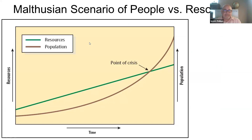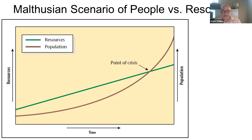We can look at this in a couple of different ways. One is what's called a Malthusian scenario — people versus resources. Malthus was a writer alive during the Industrial Revolution who wrote a famous paper looking at the growth of population versus the growth of resources. He saw population was growing exponentially but resources were growing more slowly, and theorized we would reach a crisis point where there wasn't enough food for people to live. This is the Malthusian scenario: too many people, not enough food.